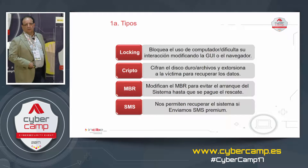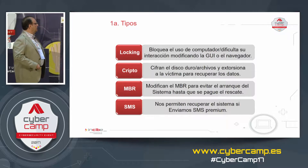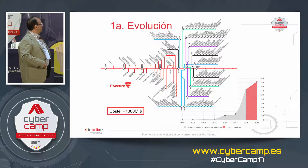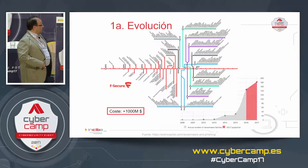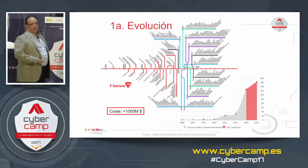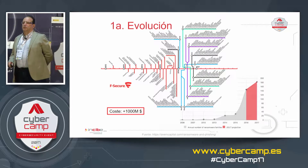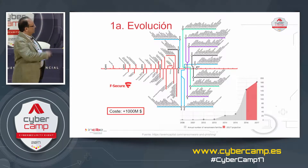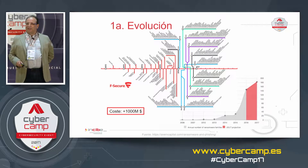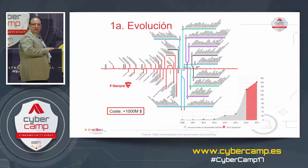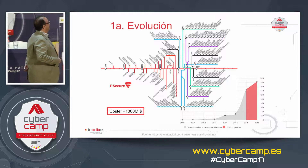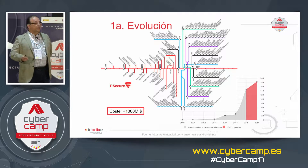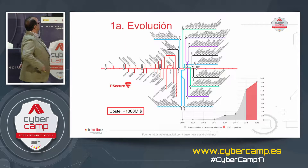Some ransomware types allow recovery of system control if you send an SMS or text message. This image — which looks like a metro map — actually shows the evolution of ransomware families over time.